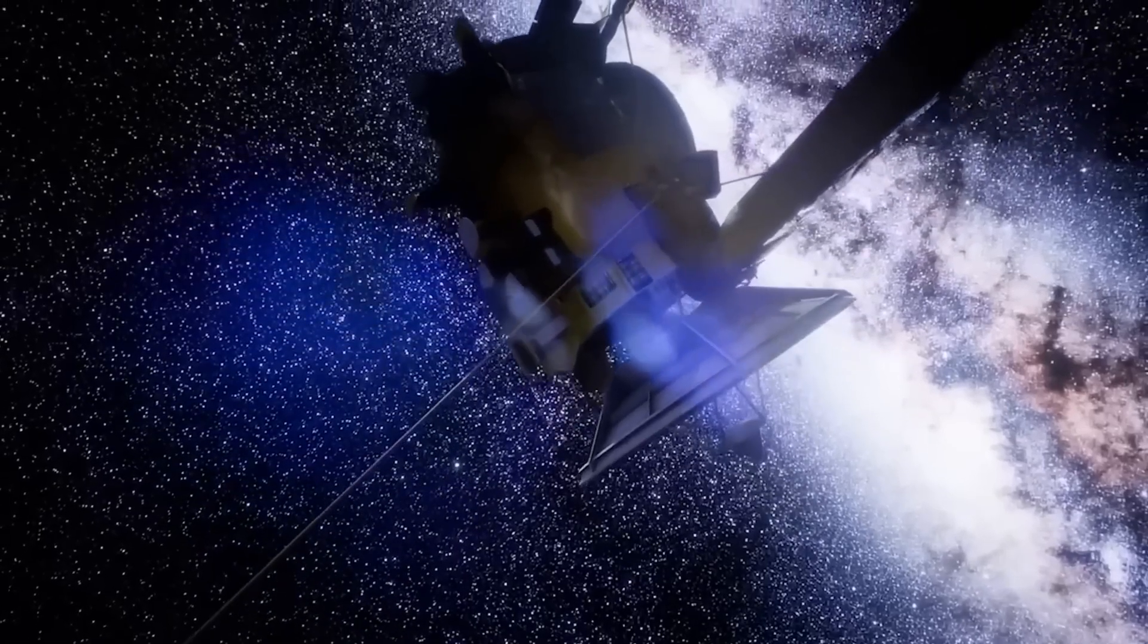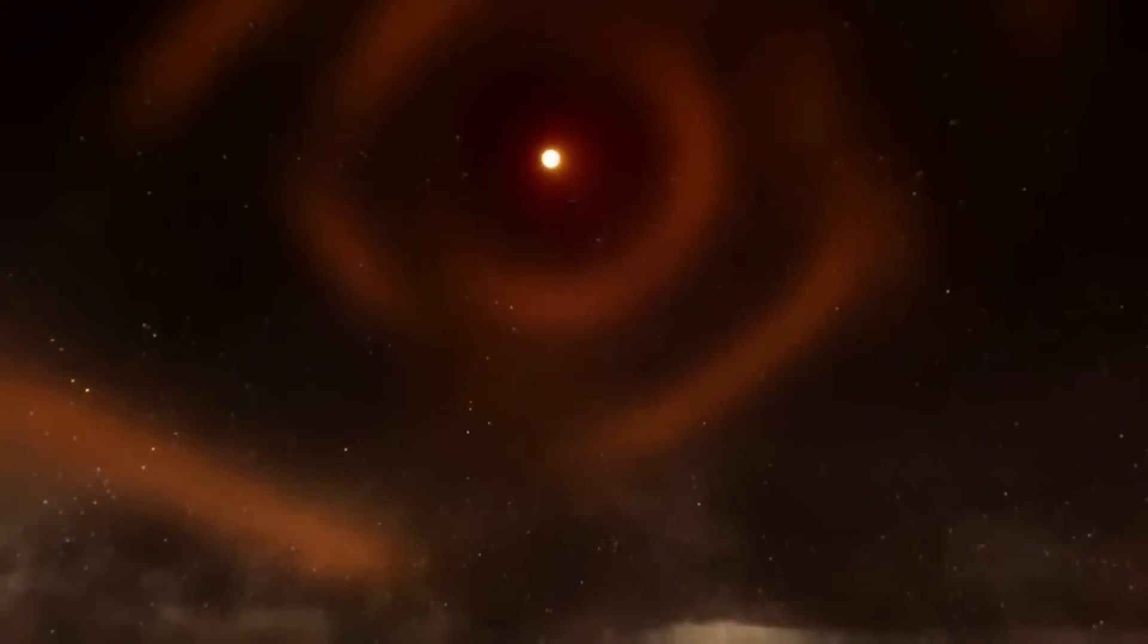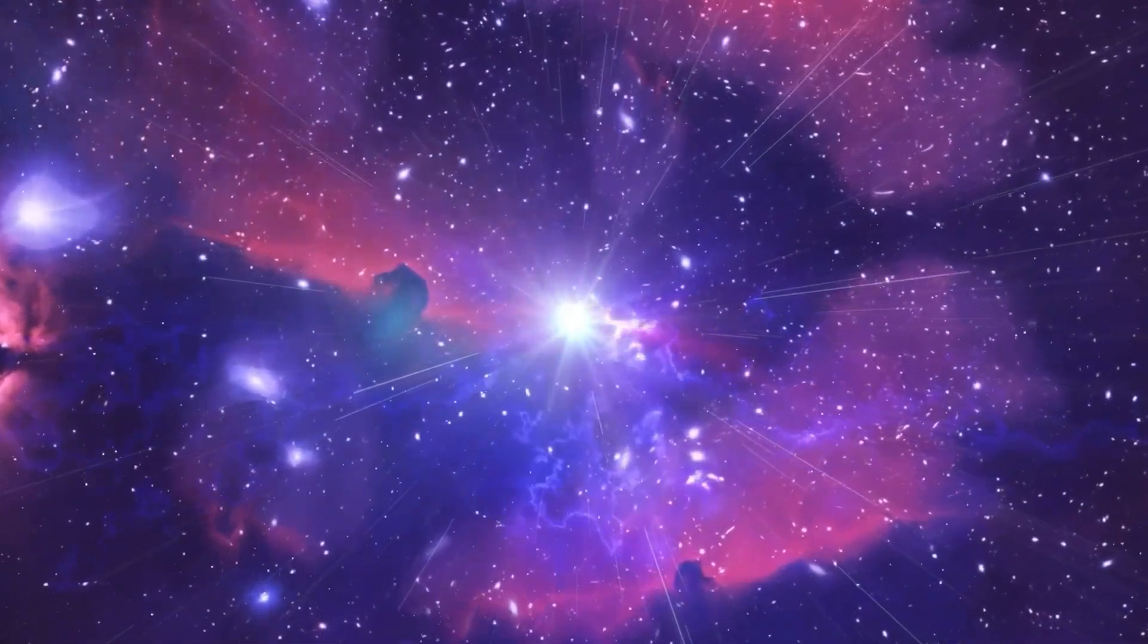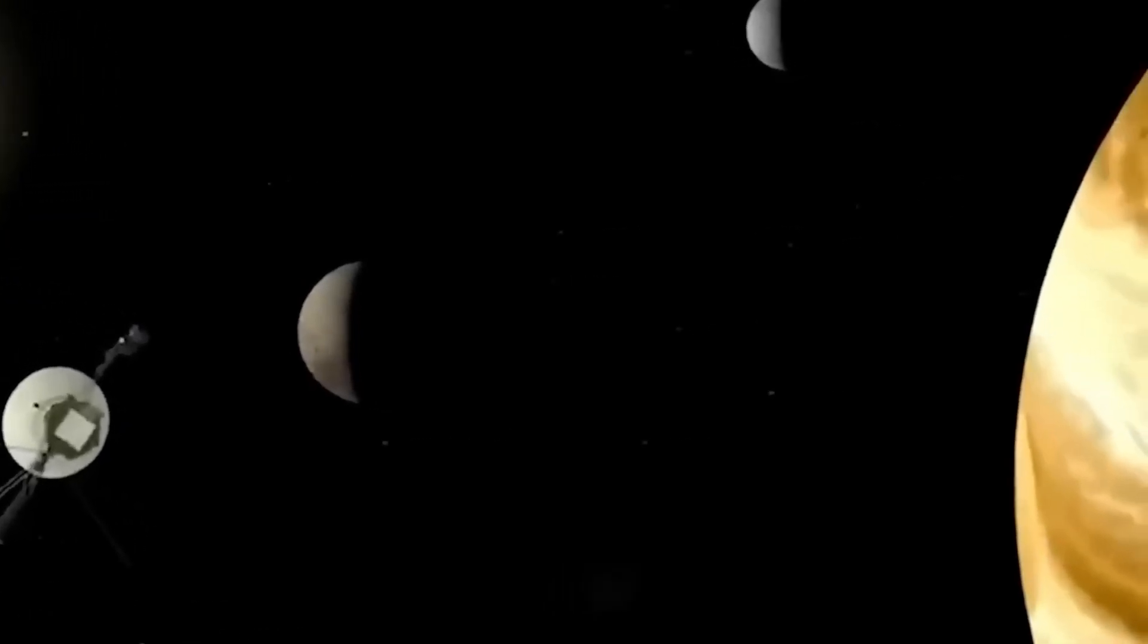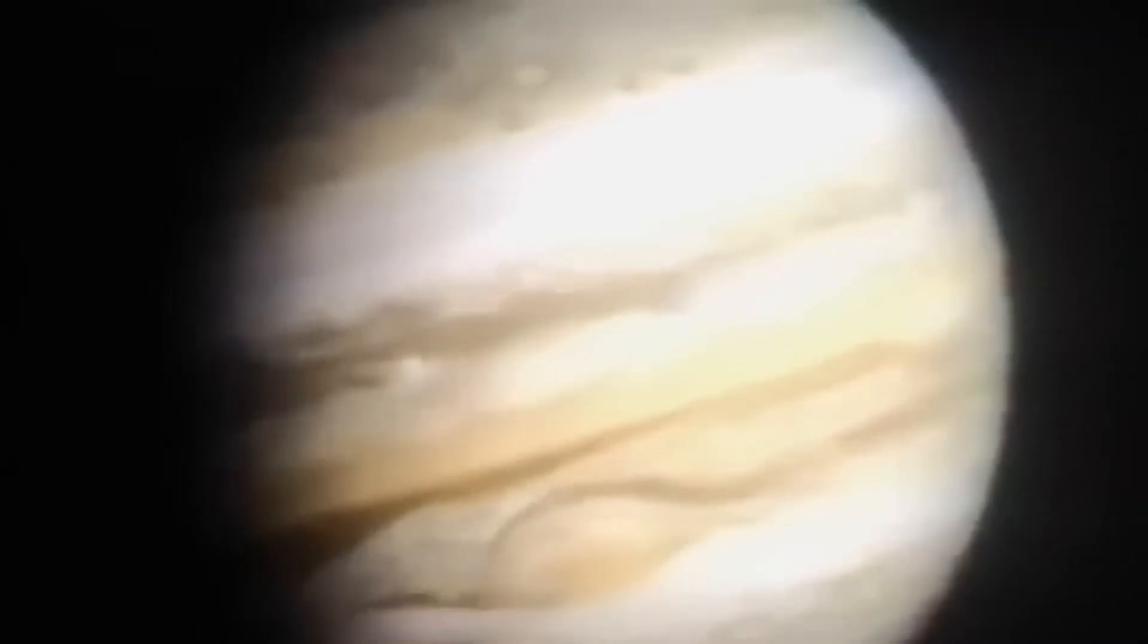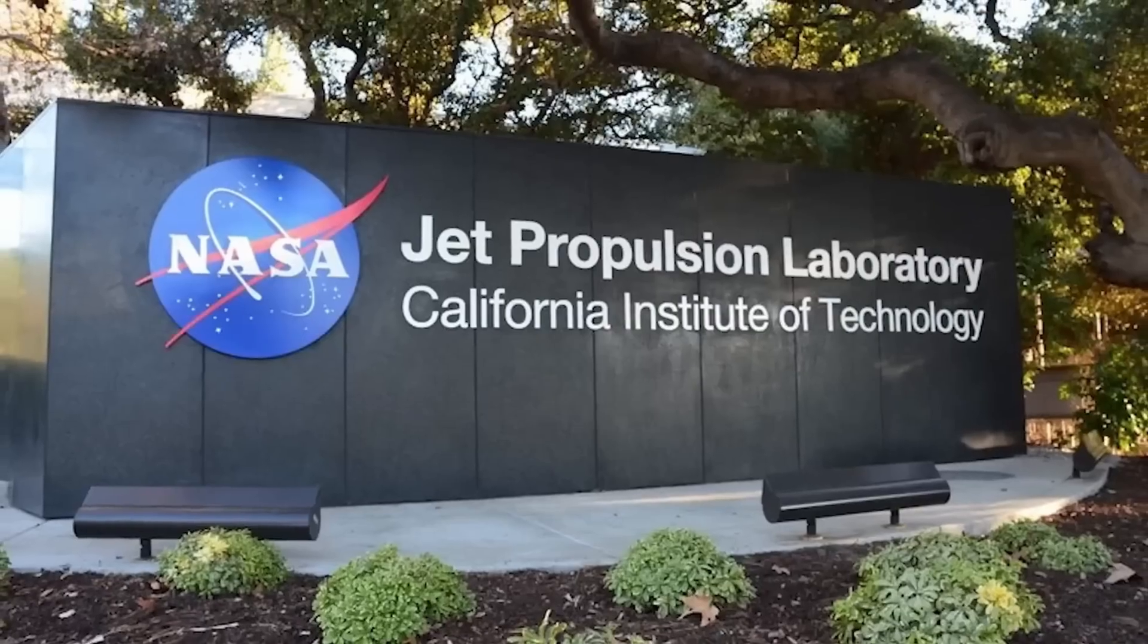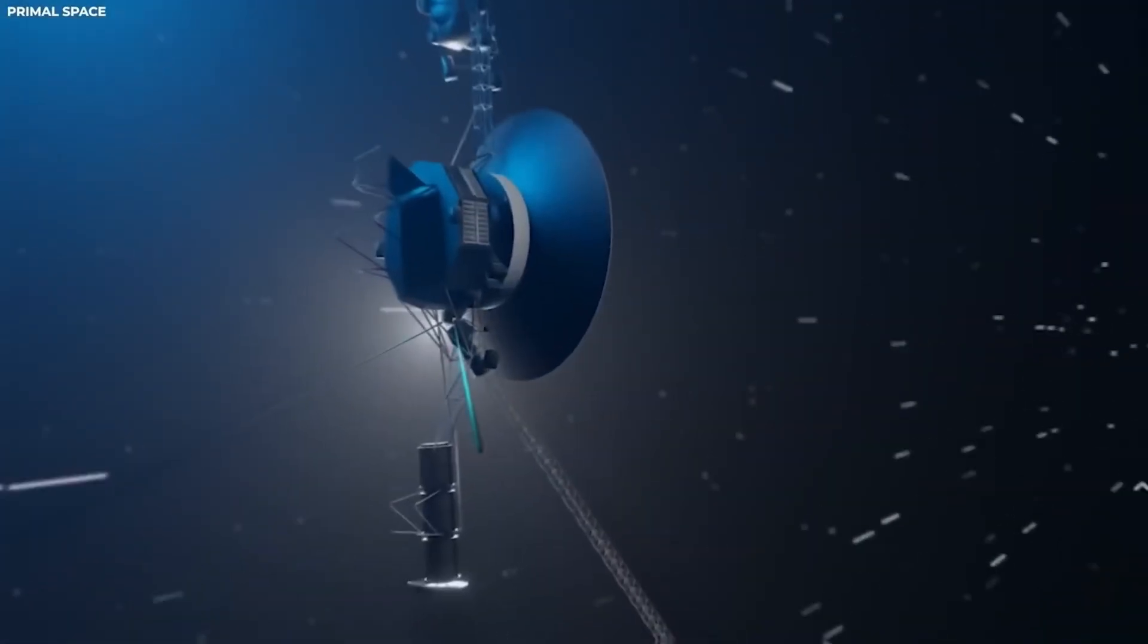The Juno spacecraft, which reached Jupiter in 2016, might eventually capture some images of Adrastea, although its primary mission is to study Jupiter itself. Adrastea is the smallest and second-closest of Jupiter's inner moons, orbits the planet at a distance of about 129,000 kilometers, approximately 1.86 times Jupiter's diameter. It has an almost circular orbit and stays close to Jupiter's equatorial plane.